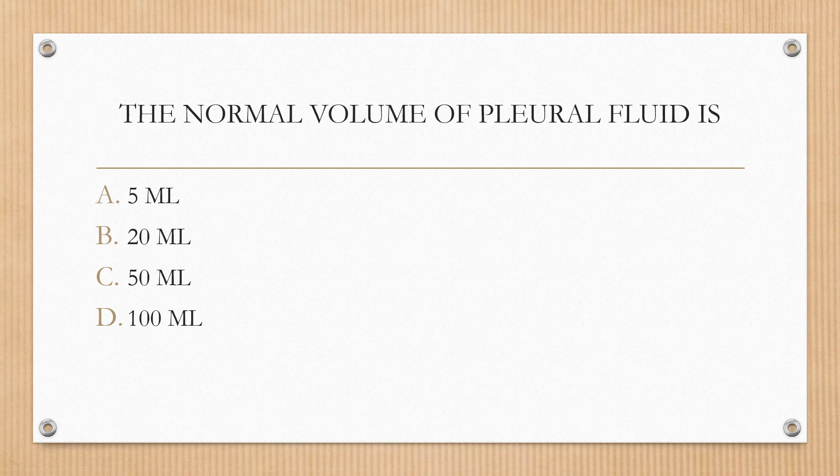Next question. The normal volume of pleural fluid is: option A 5 ml, option B 20 ml, option C 50 ml, option D 100 ml. The correct answer is option B, 20 ml.